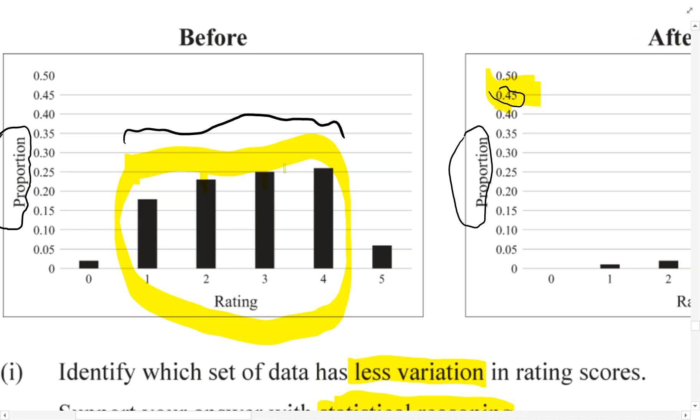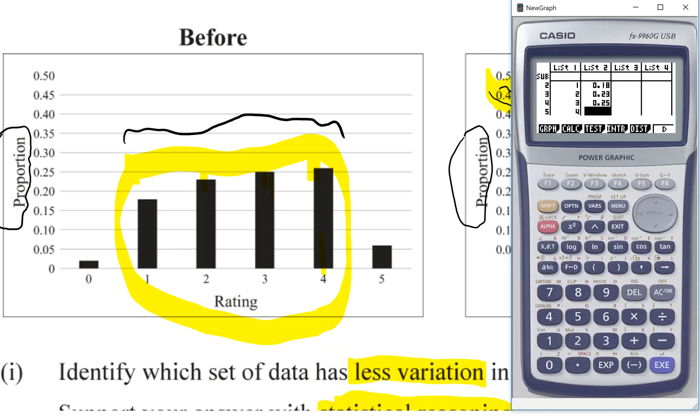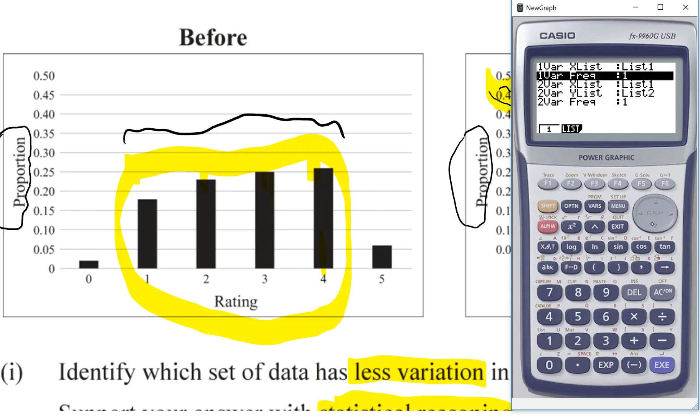And then for three is 0.25, and for the ratings of four it looks like about 0.26, and for rating of five it looks like 0.06. Then I need to tell the calculator to use list two as frequencies, and that means it works for proportions as well. So set frequency, instead of being a frequency of one we need to change it to being the number in list two. So I go F2 for List and type two for list two, then go Exit to take me back, click one there because there's one variable.